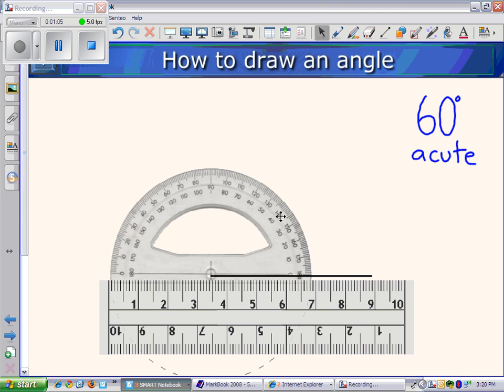So, we can take our pencil, and here's 90 degrees. To go from zero degrees to 90 degrees, we're going to look for 60 and we're just going to make a small dot above 60.